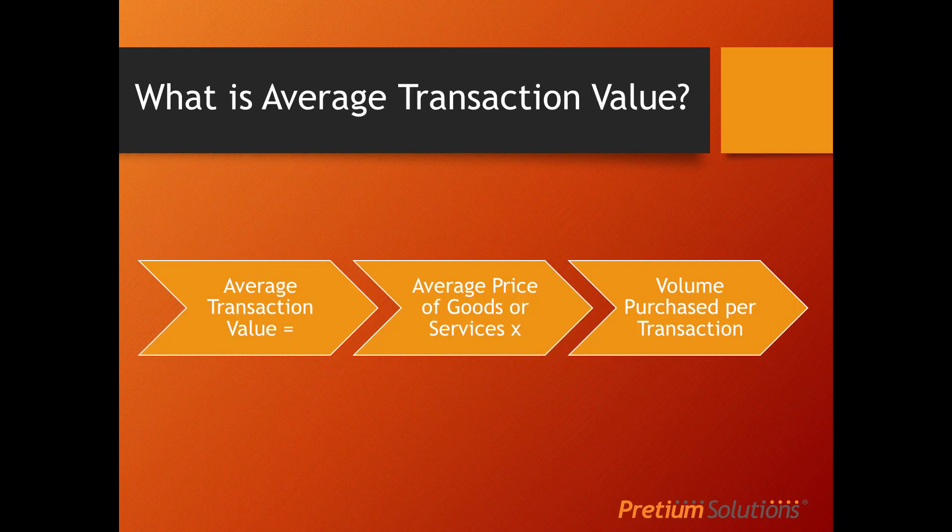Now let's look at how we increase our average transaction value. One factor is the price of the goods or services we're delivering — we can increase that by raising our price or selling at a higher value. The other thing we can do is increase the volume purchased per transaction. Instead of getting a customer to buy two items, can we get them to buy three? McDonald's is a very good example of this — they increase the value of each transaction by offering you fries with everything you buy.